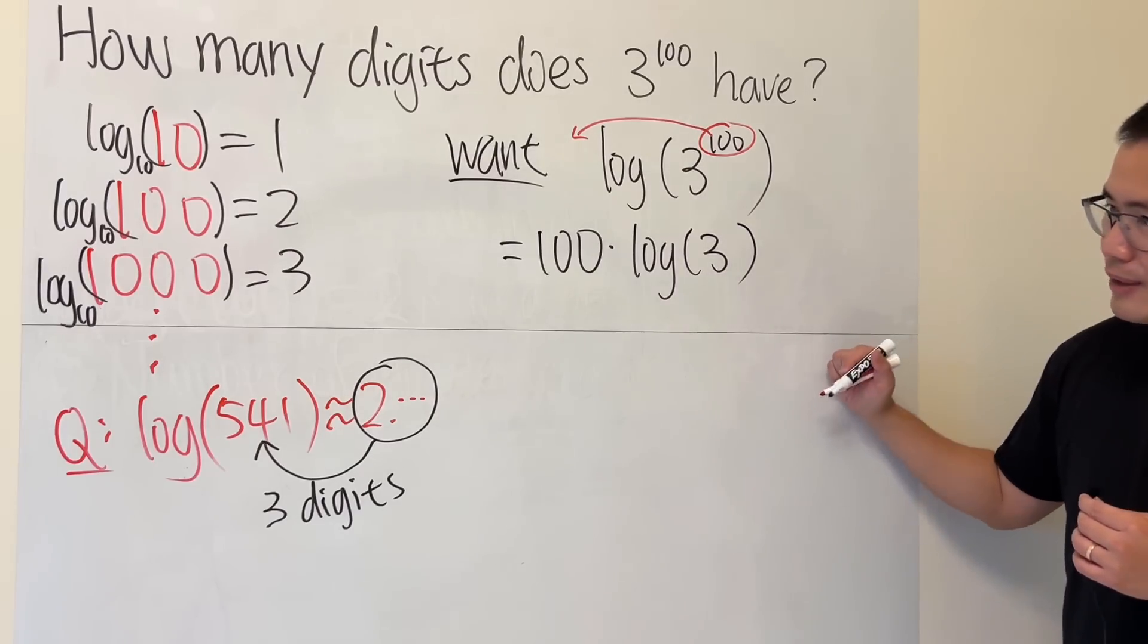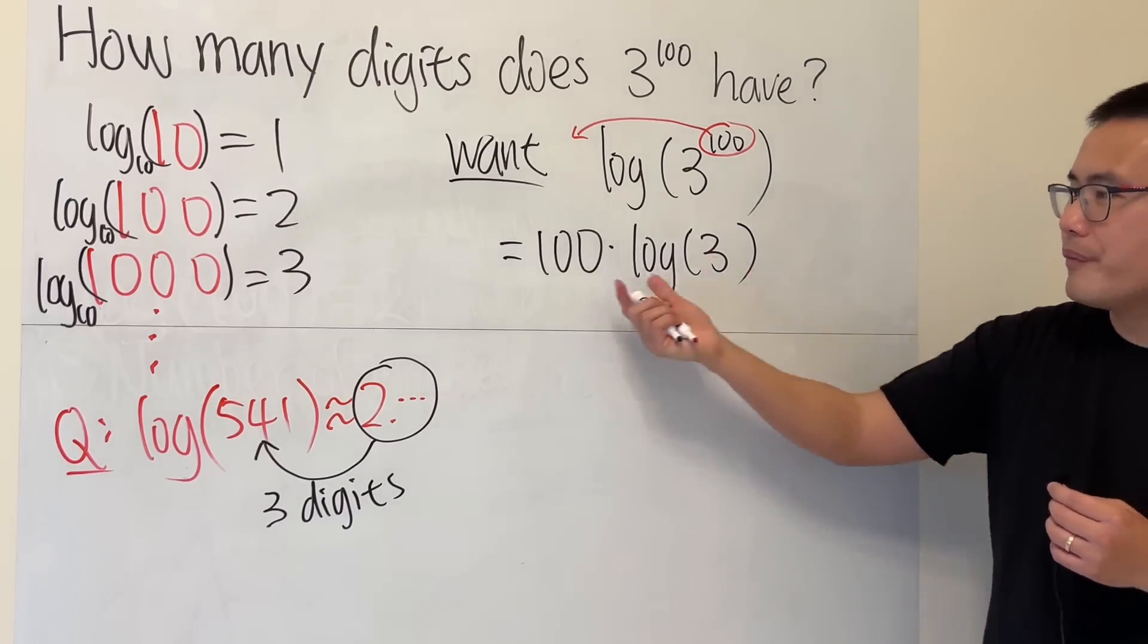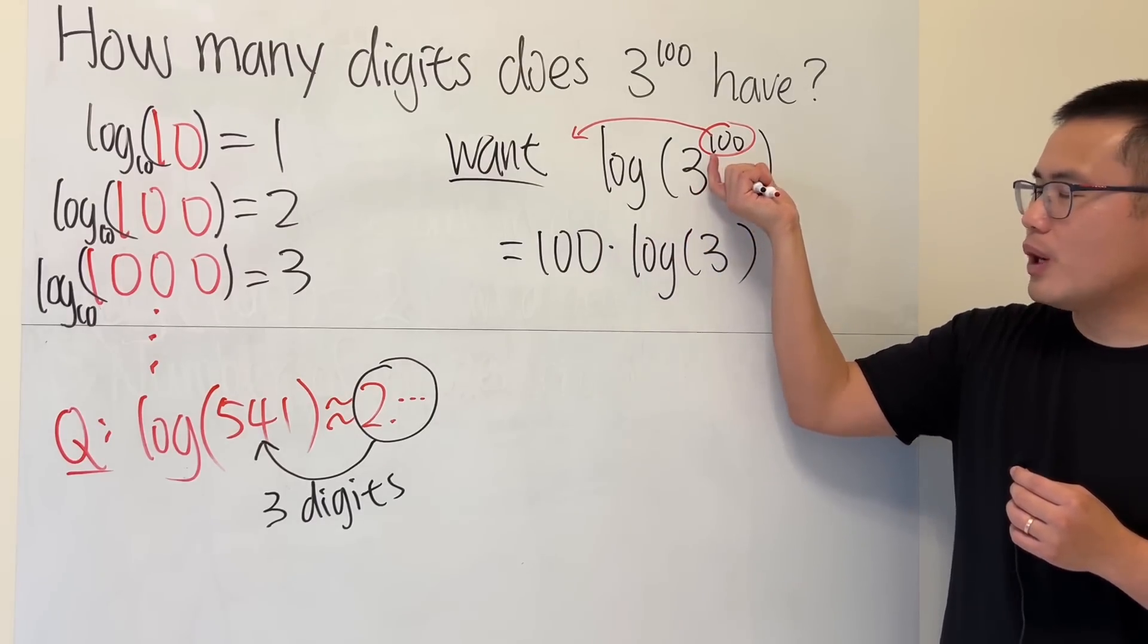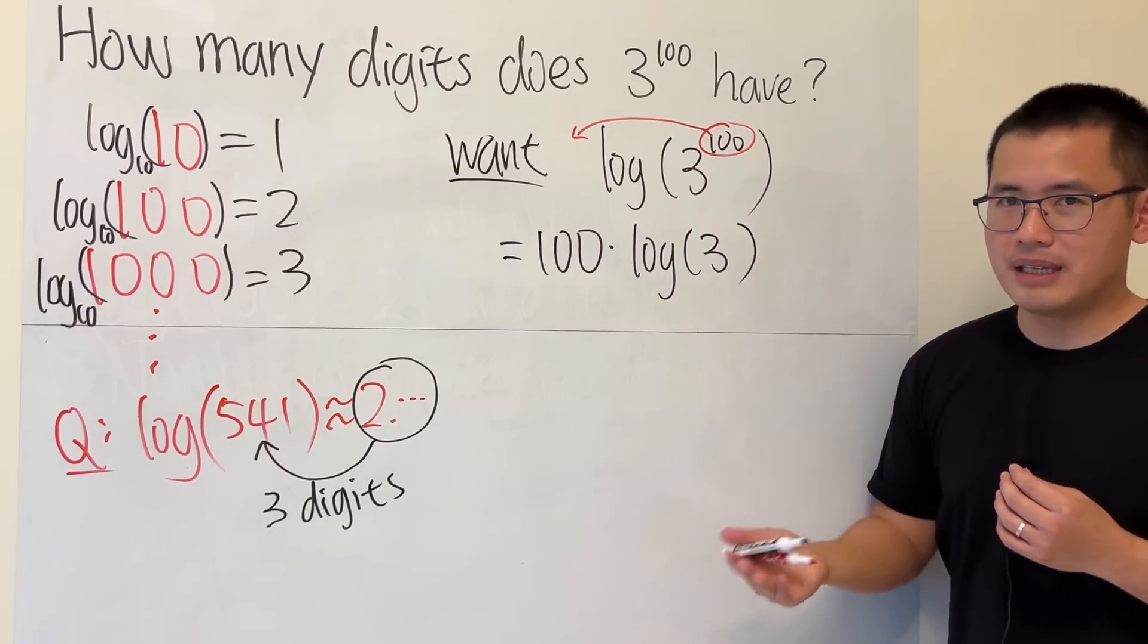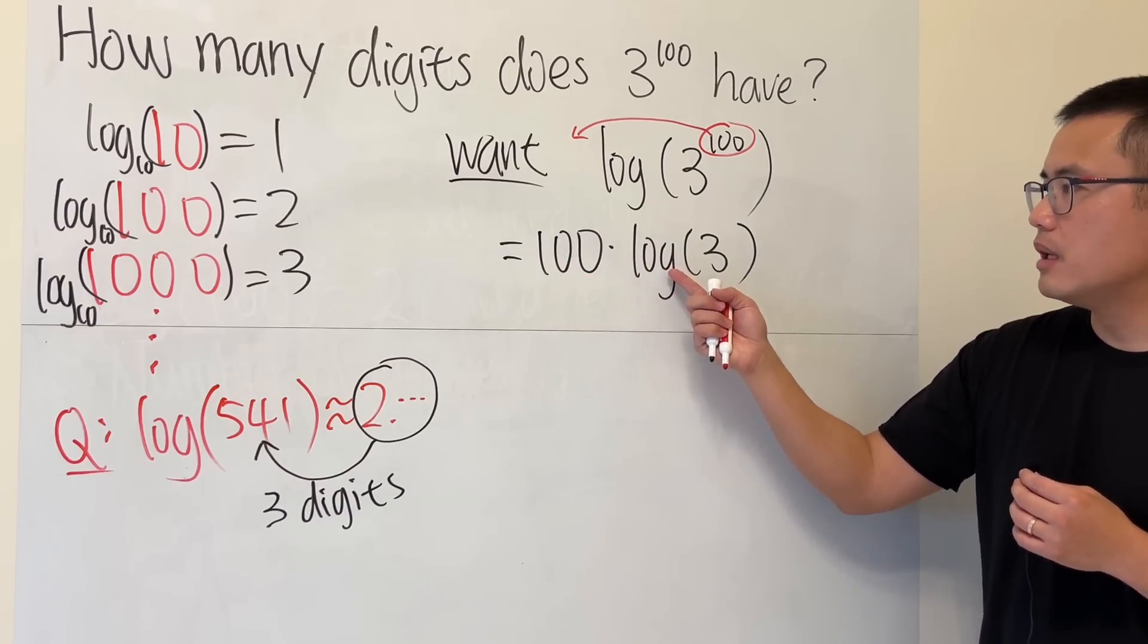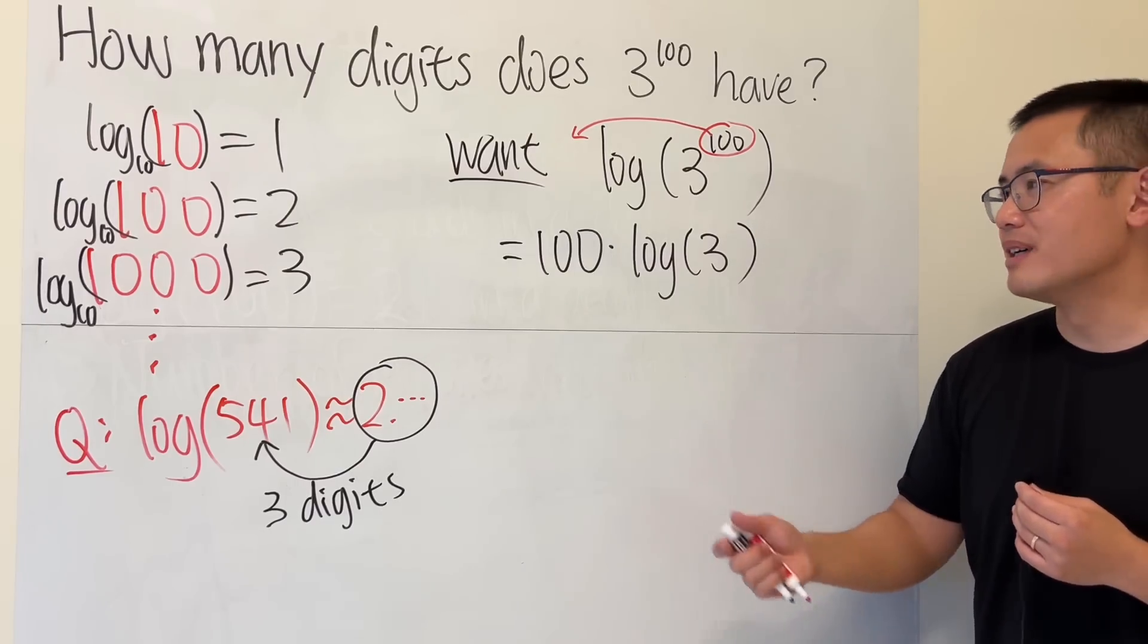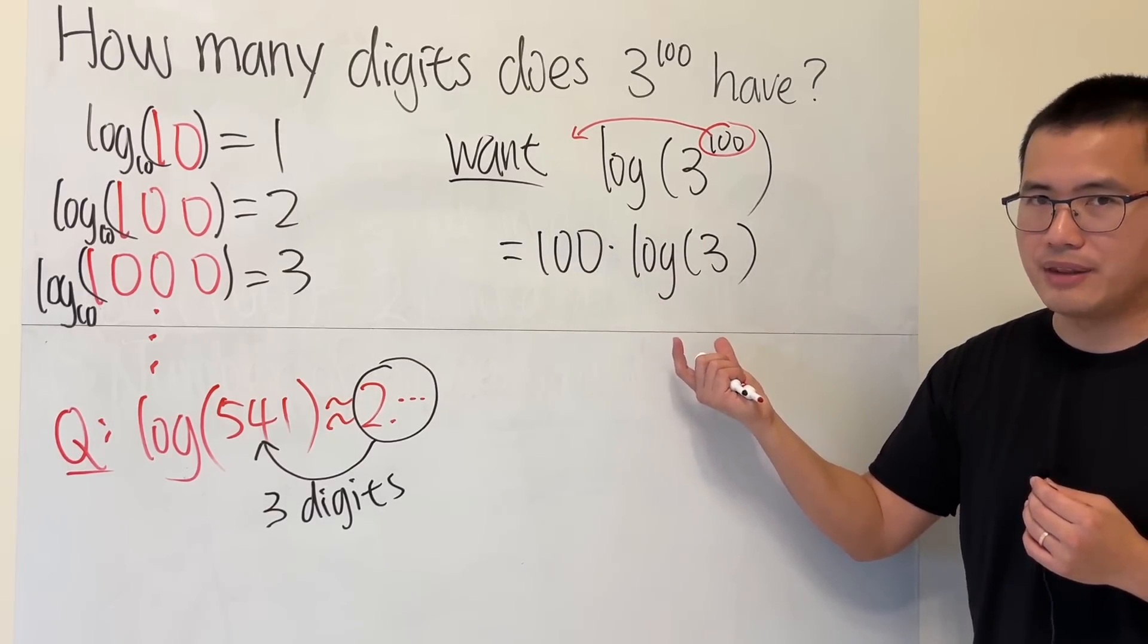Now check this out: how exactly can we figure this out? Well, if you try to do 3 to the 100th power on your calculator, some calculators might not even work. But if you try to do 100 times log of 3, that same calculator might work because this is a smaller number to handle.